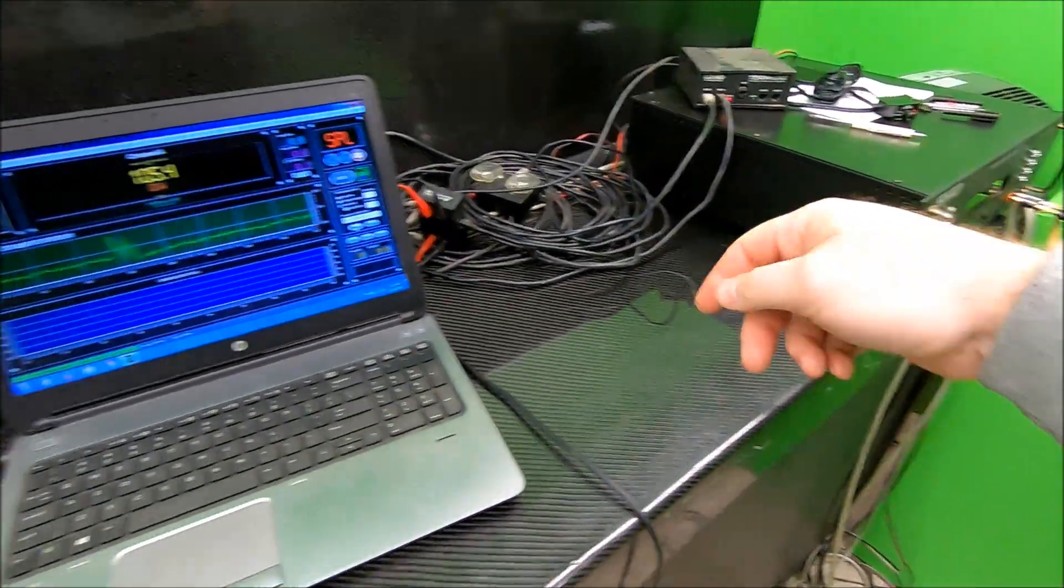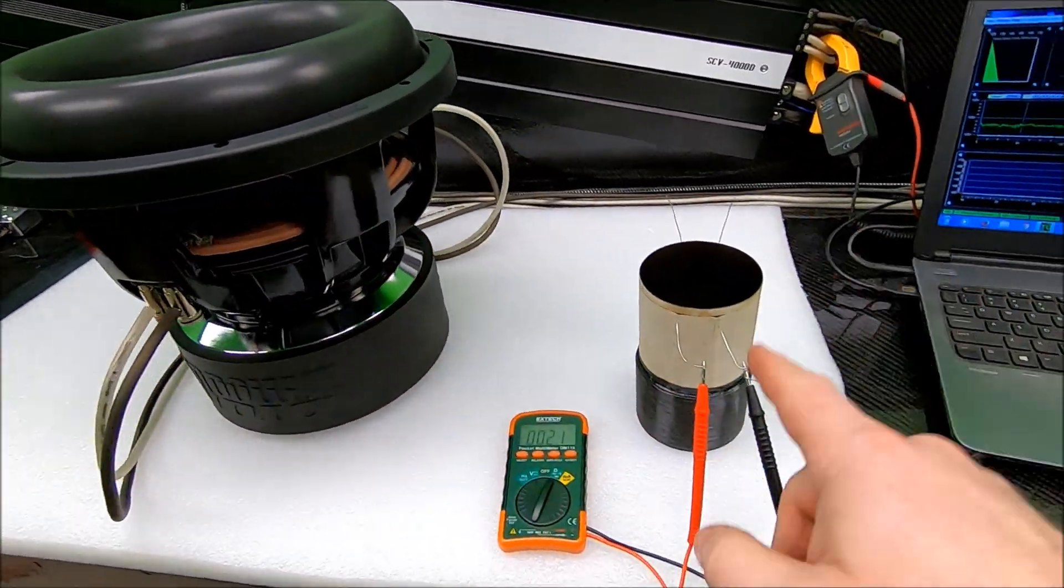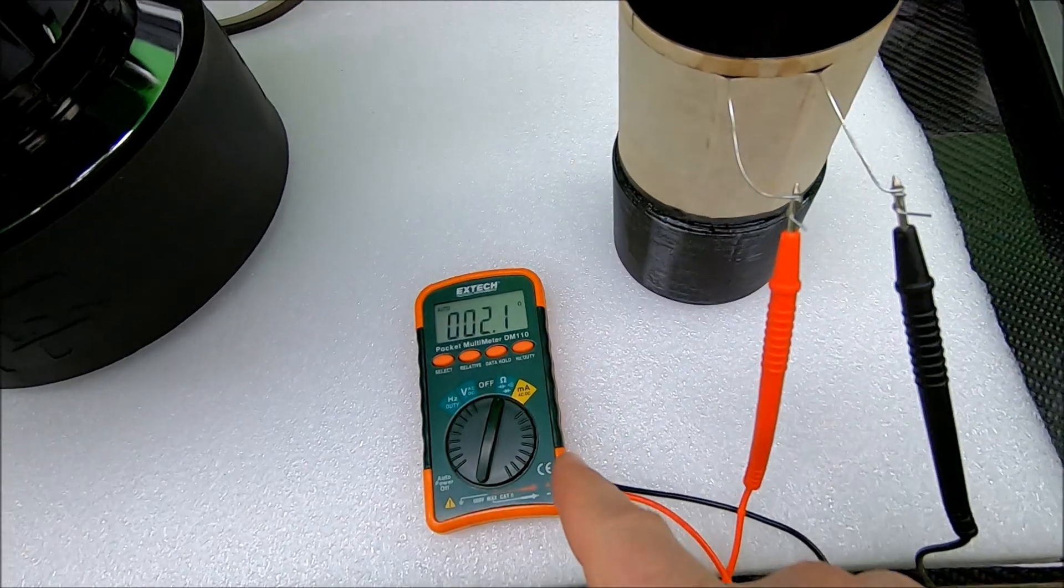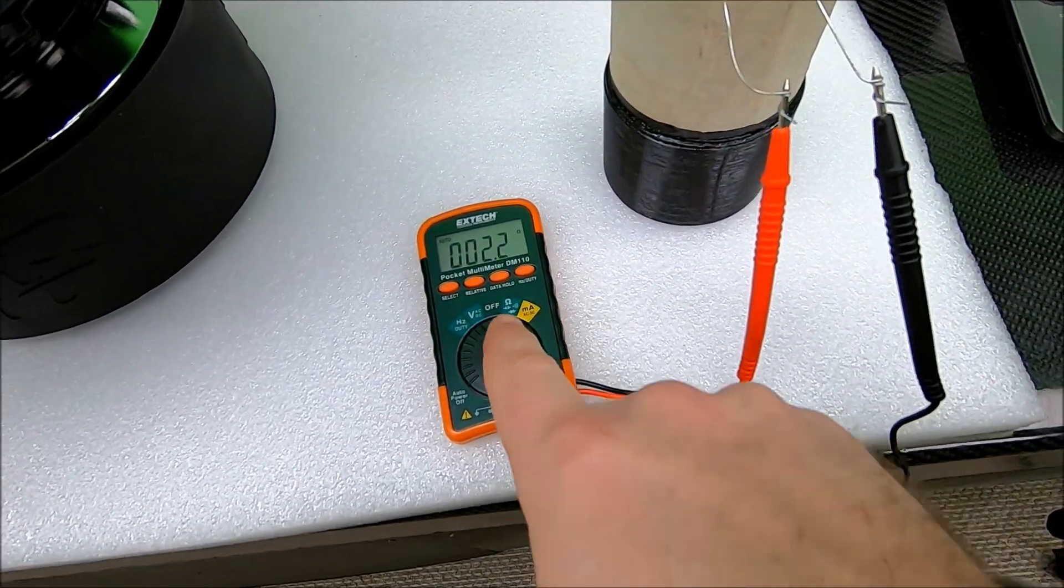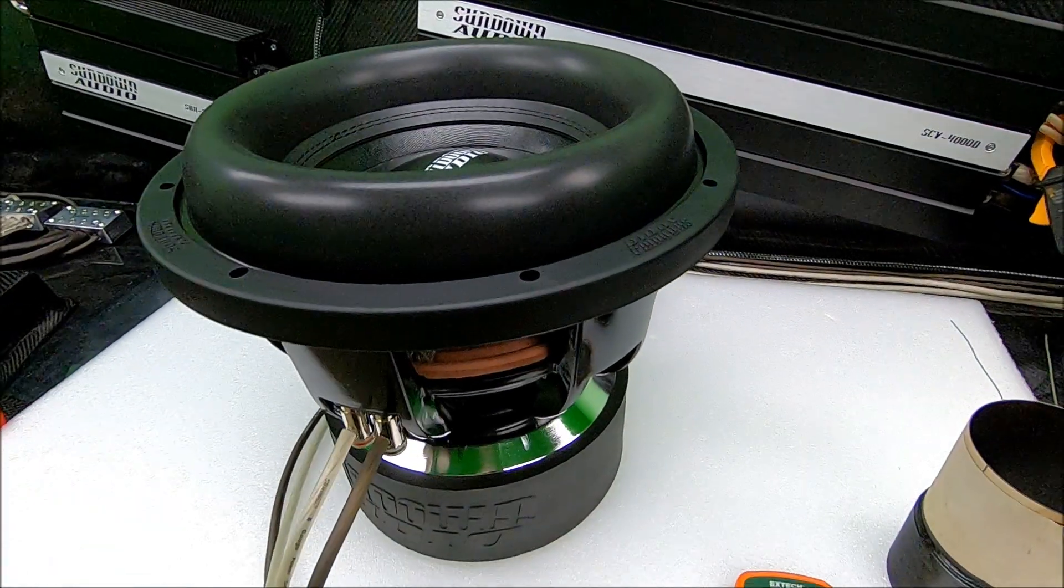Resistive loads, like we're going to see in the amp dyno. Reactive loads, like we're going to get with a subwoofer. Because you got your voice coil, and again, here we are, we're reading the DCR, it's supposed to be 2 ohms, we're right there bouncing a little bit.